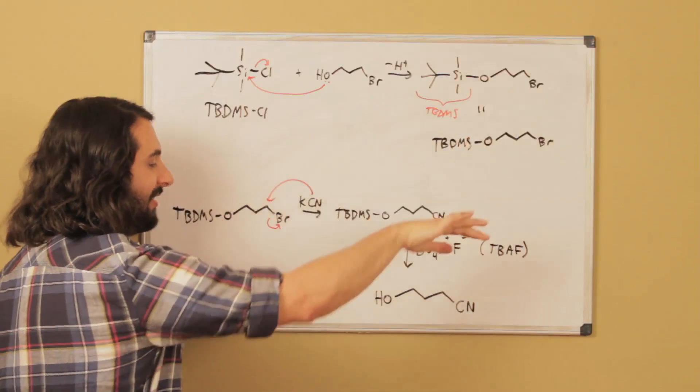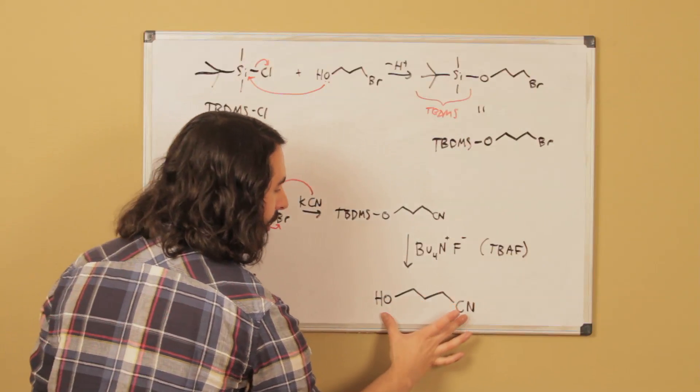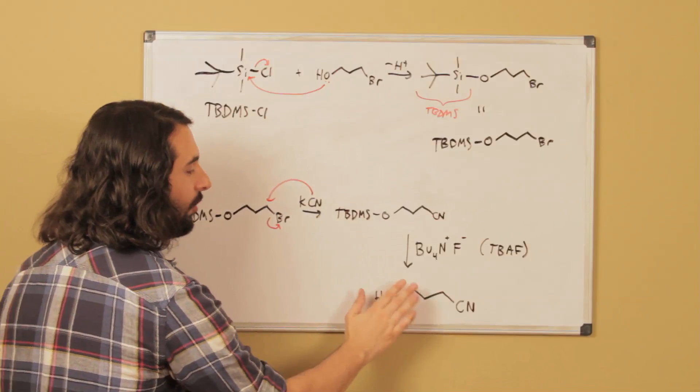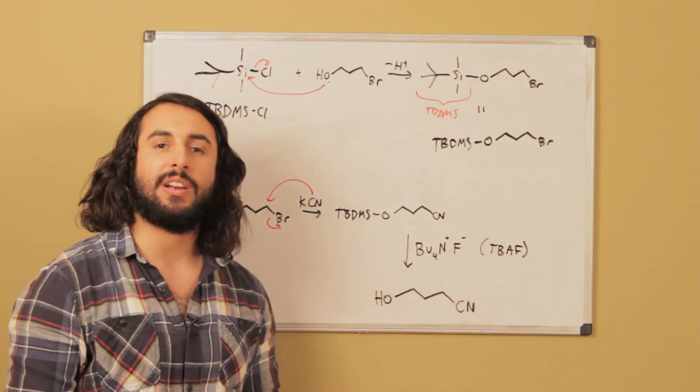The fluoride can displace the silicon-oxygen bond, the oxyanion gets protonated from solvent, and we have our deprotected alcohol back to normal with the SN2 achieved.